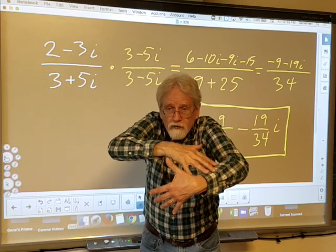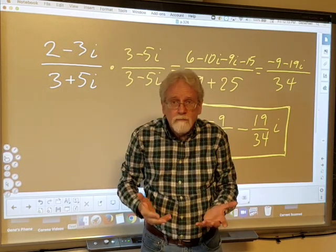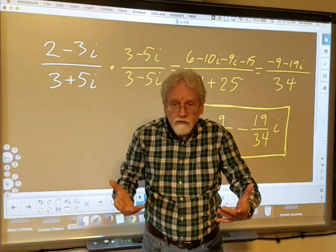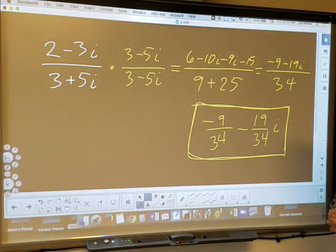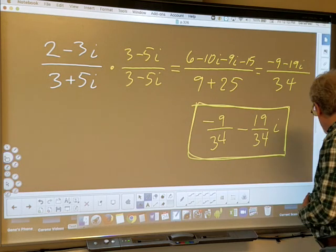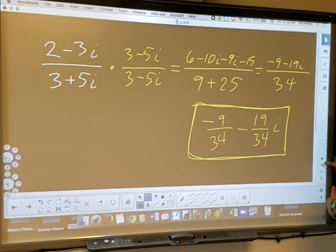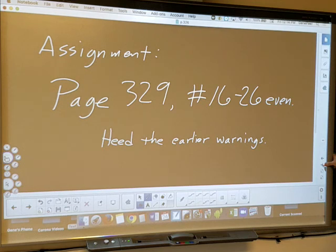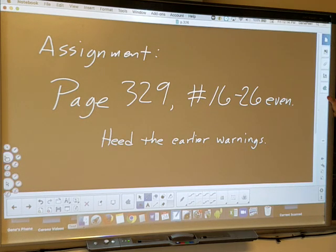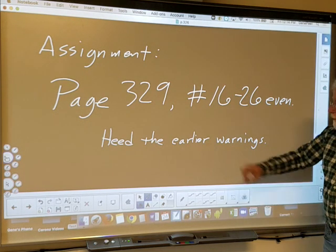The set of complex numbers is closed under addition, subtraction, multiplication, and division. The second part of the assignment is page 329, numbers 16 through 26 even. Remember to combine that with the earlier assignment — that's the test to see if you watched the whole video.